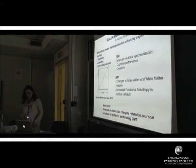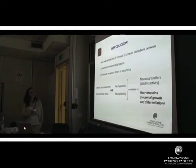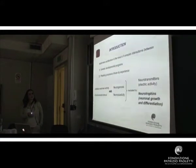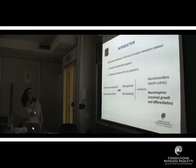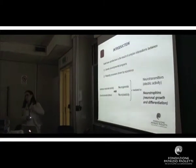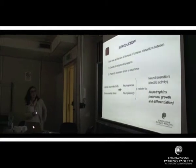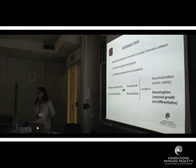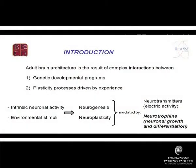As you know, the adult brain architecture is the result of complex interaction between genetic programs that are active throughout the development of the organism and processes of plasticity driven by experience. Experiences include sensory experience, emotional experience, environmental stimuli, and so on. What we know is that intrinsic neuronal activity as well as environmental stimuli can trigger processes of neurogenesis and neuroplasticity.